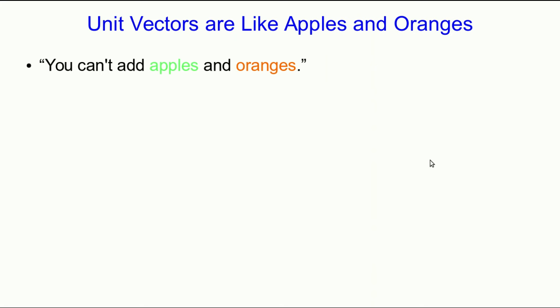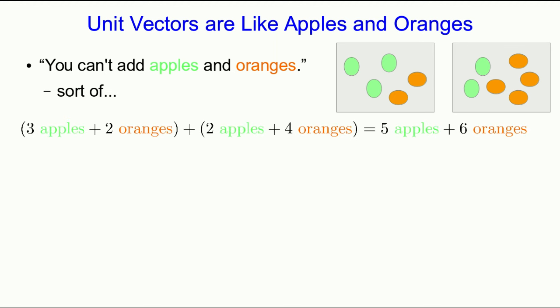Well, we're going to use something that I'm sure you've heard many times, but seems to have nothing to do with vectors. And that's that you can't add apples and oranges. Well, sort of. I've got these two boxes. And clearly, I can say that my three apples and two oranges in one box, plus my two apples and four oranges in the other, come out to five apples and six oranges.